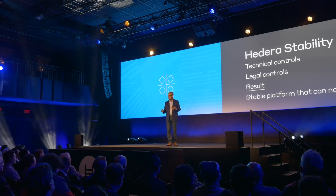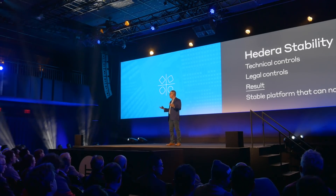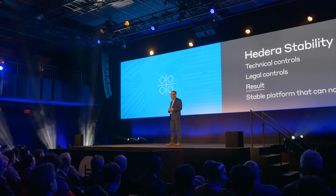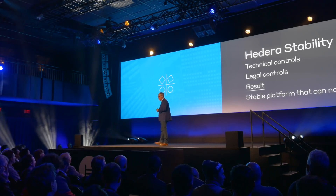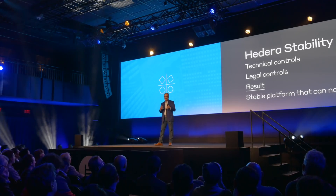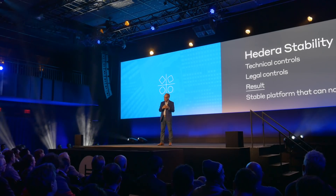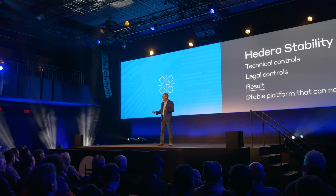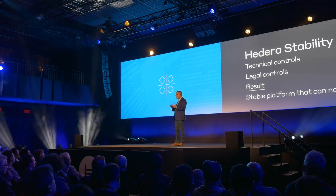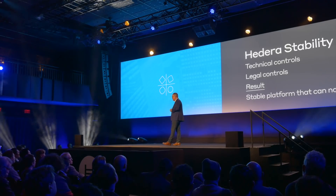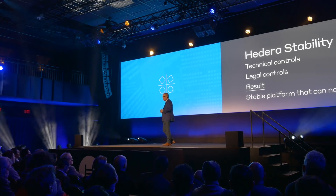and then pass off those changes as being accepted or valid. Hedera's state proofs also make it possible for the governing body to specify what changes should be made to the nodes, ensure the precise time that those changes are applied, and guarantee that they are applied to the nodes in the network.